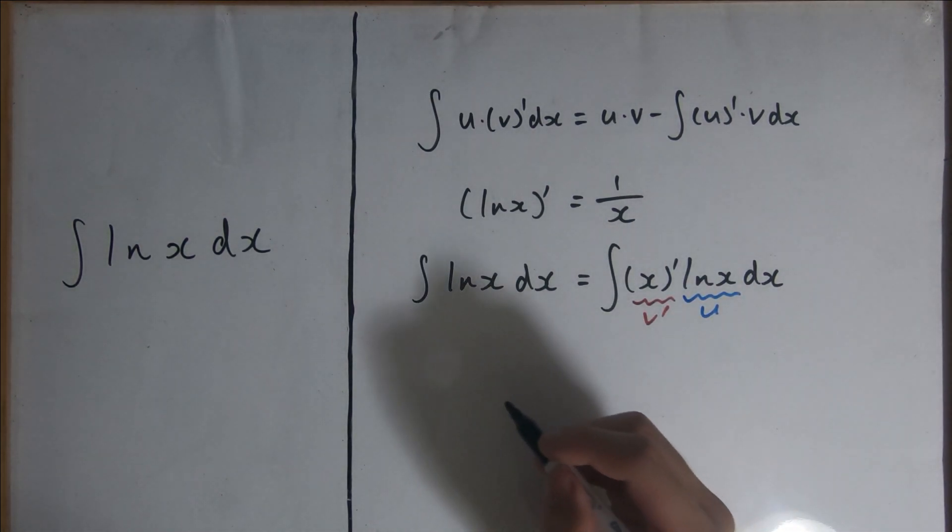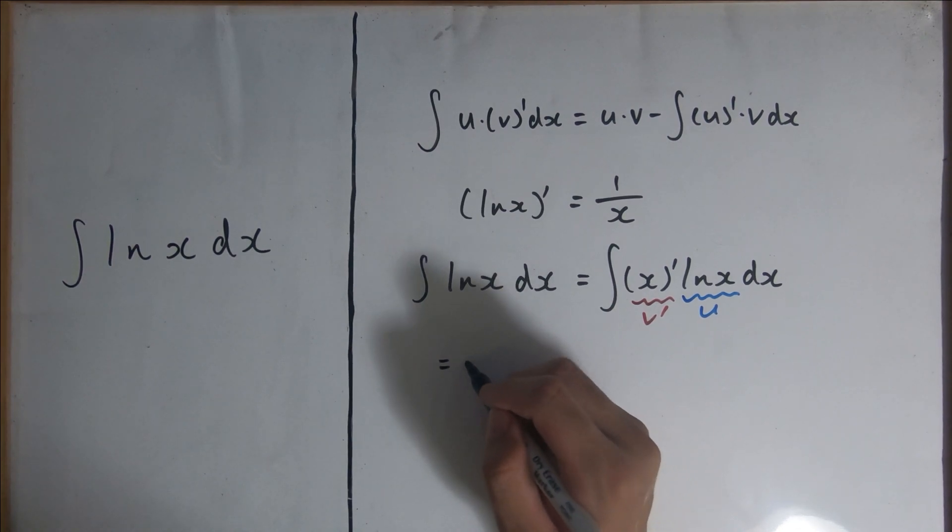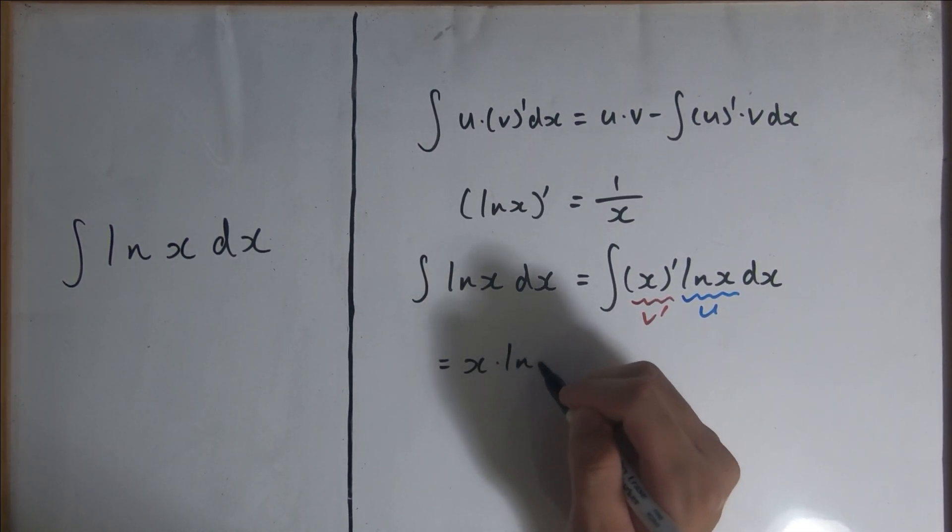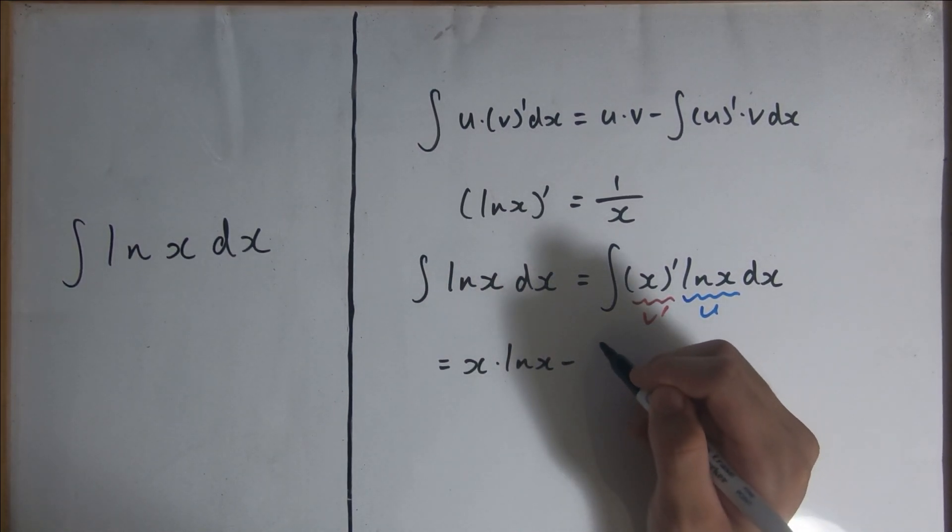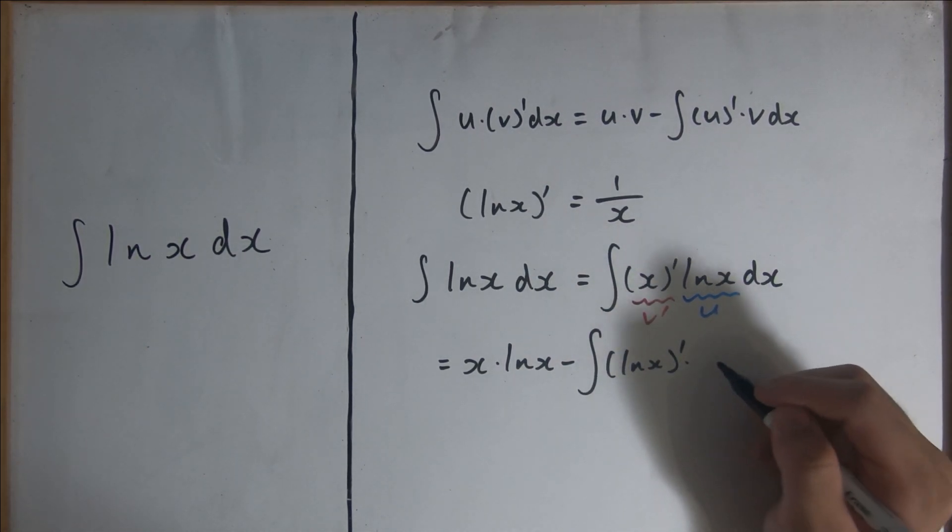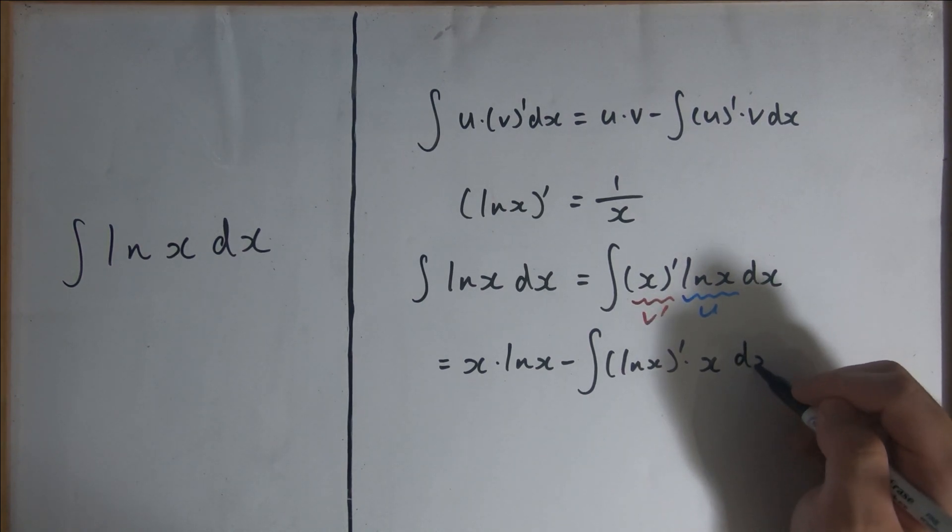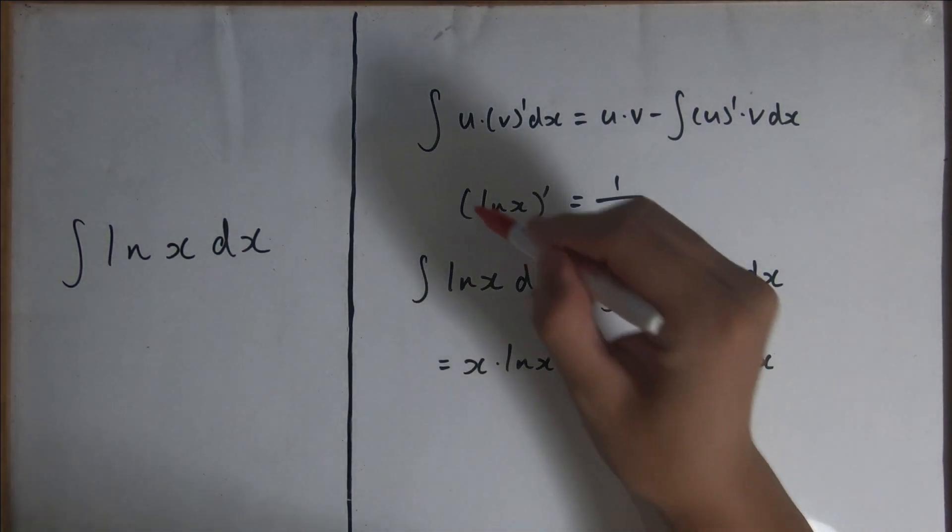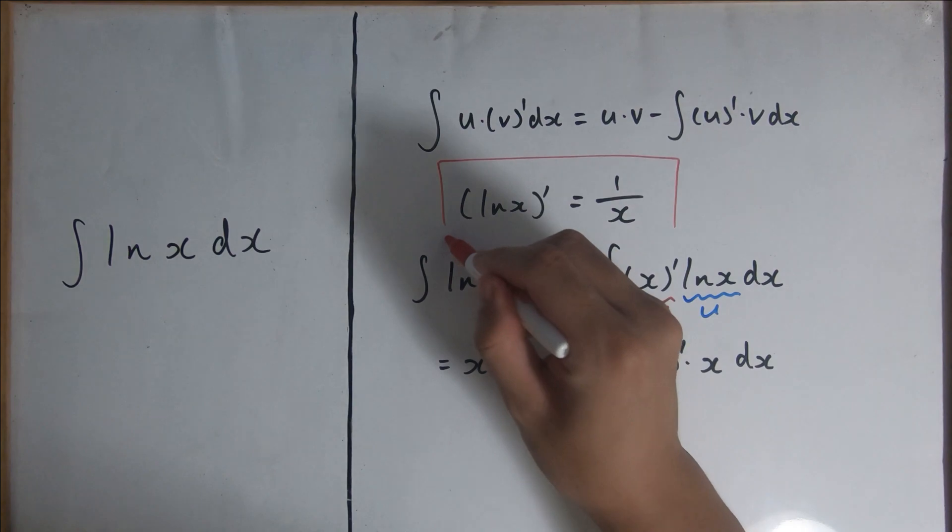Using our general equation, we get that this is equal to x times the natural log of x minus the integral of natural log of x prime times x dx.